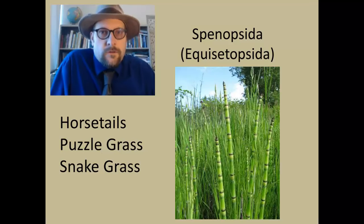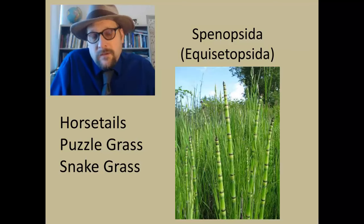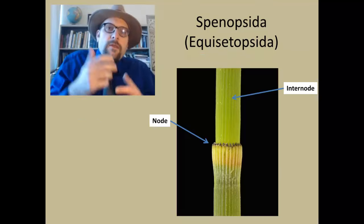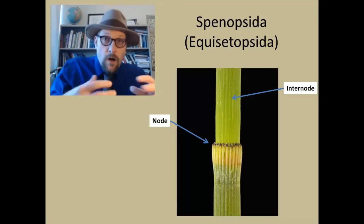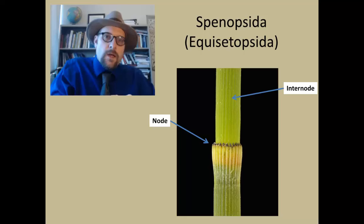Botanists classify horsetails within the group Sphenopsida, or Equisetopsida, which means the horsetails. The remarkable thing about horsetails, and what distinguishes them from all other plants, is the unique way in which they grow and exhibit vascularization within their stems.